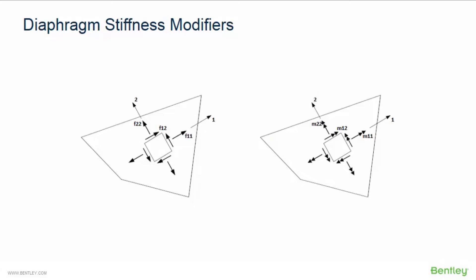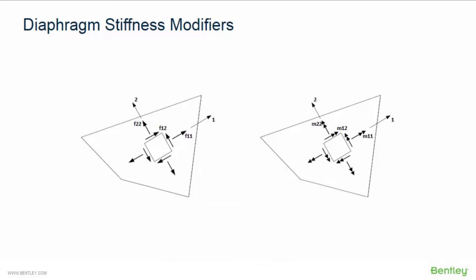Diaphragm stiffness properties can be modified to account for the cracked properties of concrete decks in different directions and actions, both in-plane and out-of-plane. For our model we're going to specify the effective thickness, Poisson's ratio, and elastic modulus for the program to calculate diaphragm stiffness. You also have the option to specify diaphragm stiffness modifiers instead, which can be used to account for cracked properties of concrete decks or different directions and actions. The program allows you to define three stiffness modifiers for in-plane action and three for out-of-plane action, definable through the properties table in the RAM Modeler.